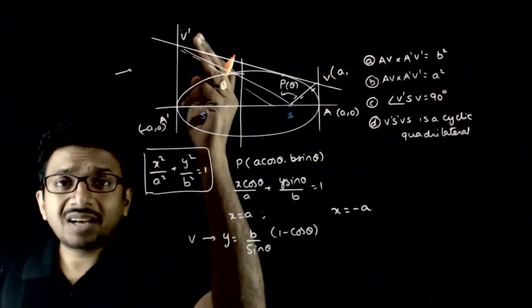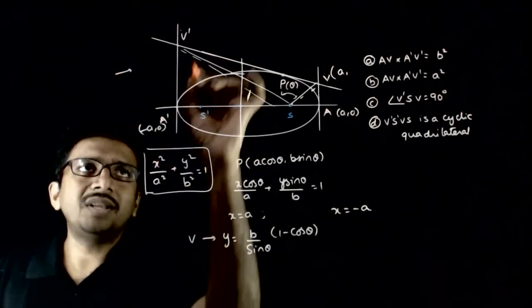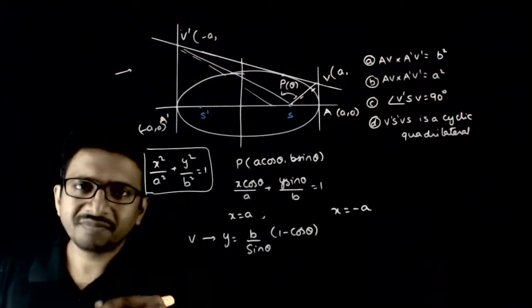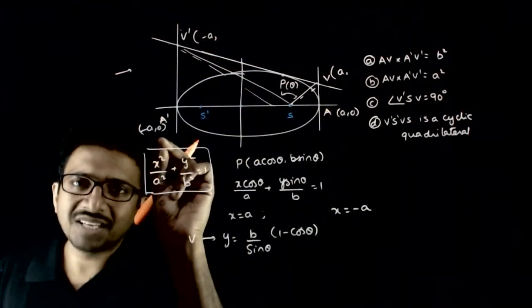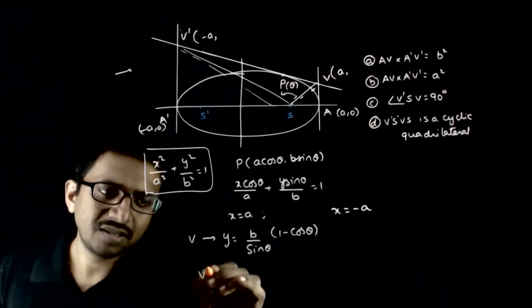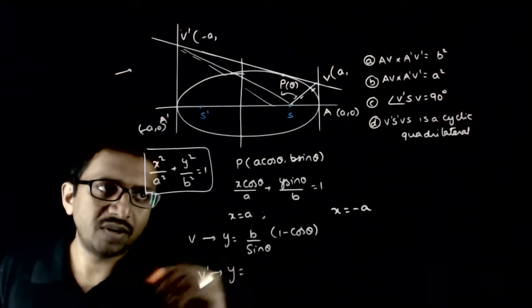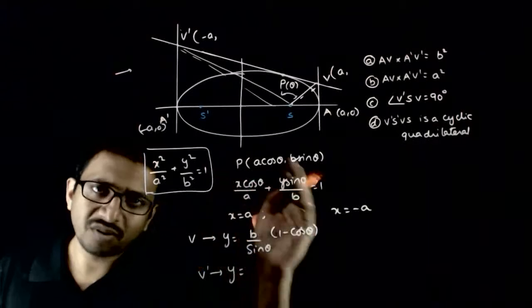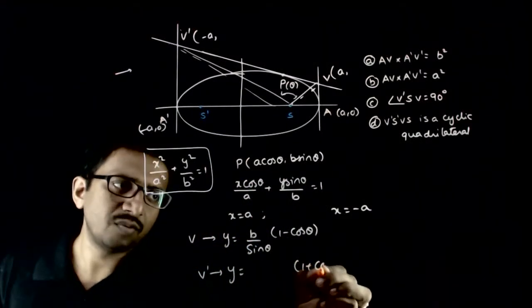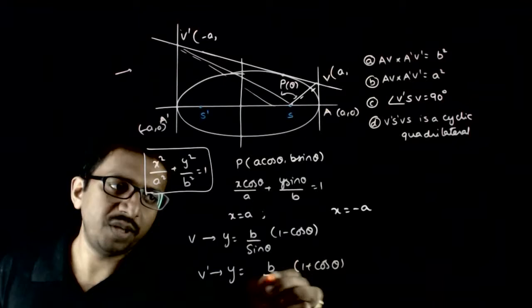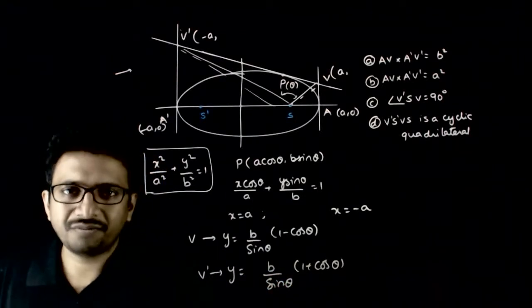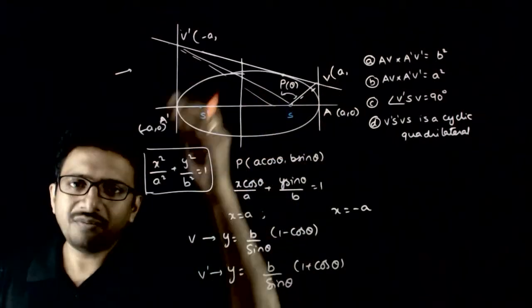Similarly, the x-coordinate of V dash is −a. Substituting x = −a into the tangent equation, the y-coordinate of V dash is (b / sinθ)(1 + cosθ).